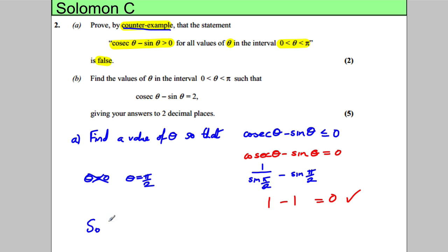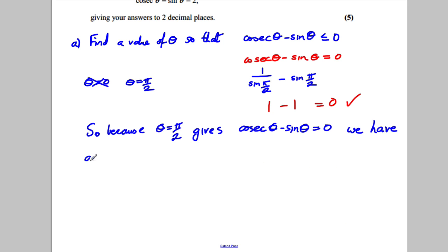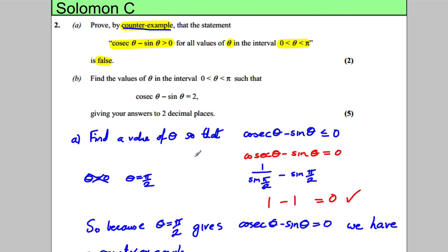So we found cosec θ - sin θ equals zero, we have a counterexample. And this counterexample proves that this thing is not always bigger than zero, because θ = π/2 in our range makes it equal zero. So we're done.